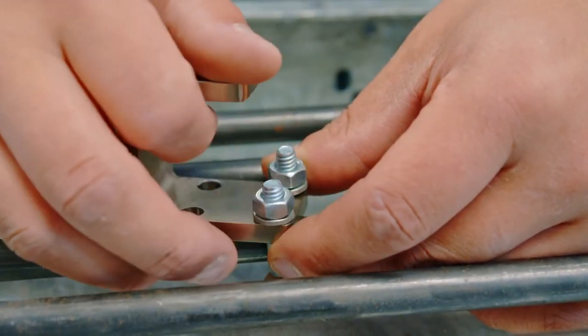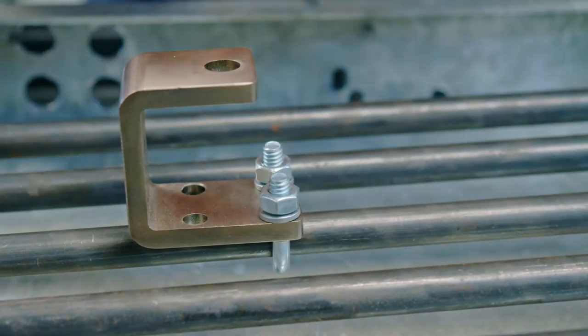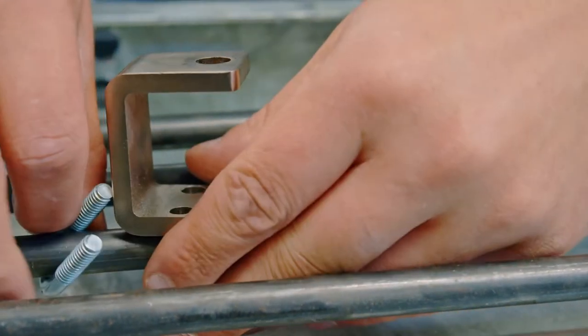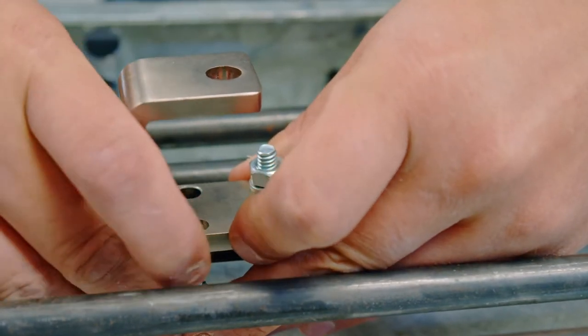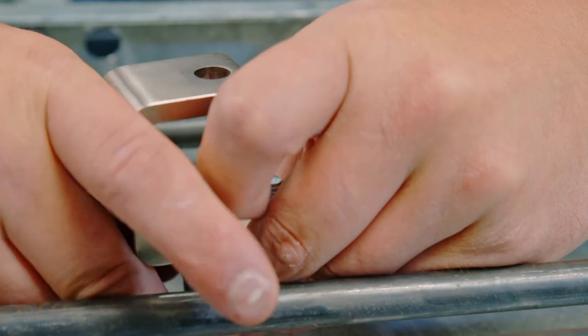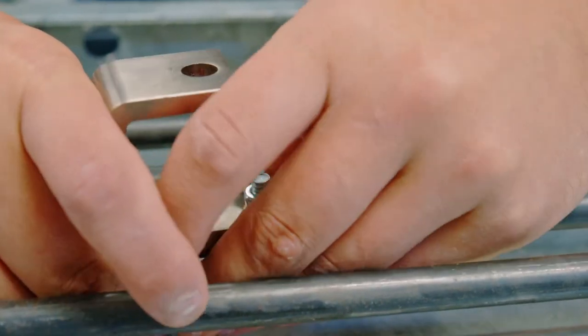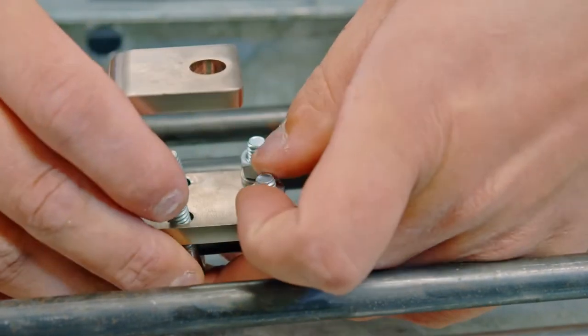Again, this is easier to do underneath the truck because the U-bolt is just hanging there, and then we'll go and install the other one.